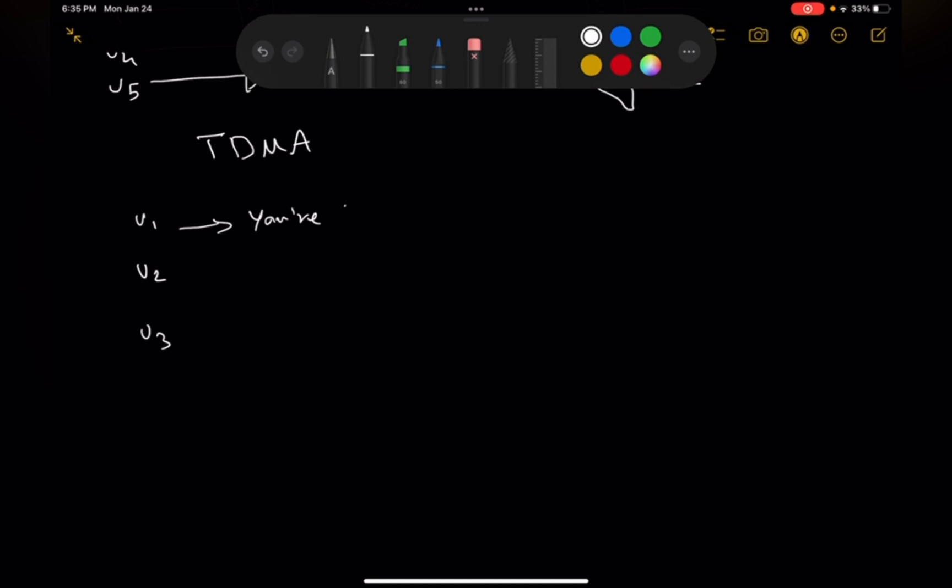Like the multiplexer will say, okay, you're the first one, second one, and you're the third one. And they will send the data like this - like the first communication. So you are user one, you are user two, and user three. Communication is done.